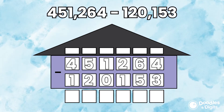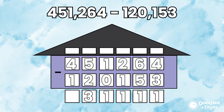Let's try another one: 451,264 minus 120,153. Starting in the ones place: 4 minus 3 equals 1, 6 minus 5 equals 1, 2 minus 1 equals 1, 1 minus 0 is 1, 5 minus 2 is 3, and 4 minus 1 is 3. So our total answer, putting the comma in, is 331,111.